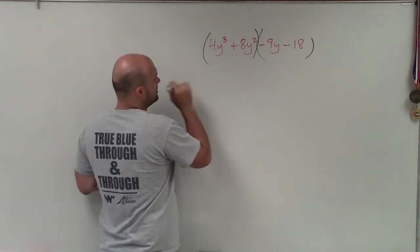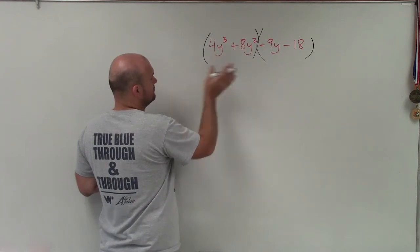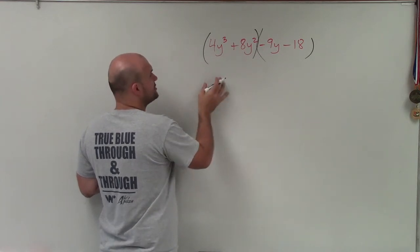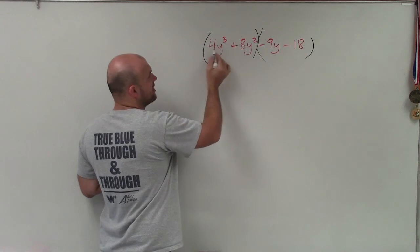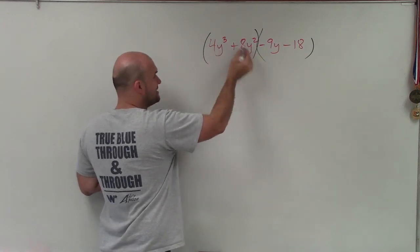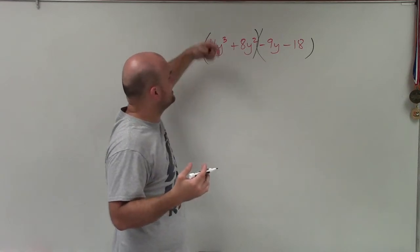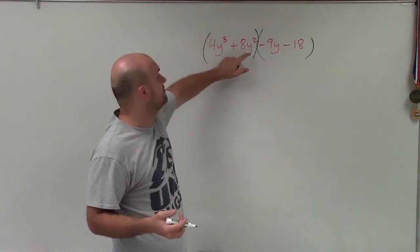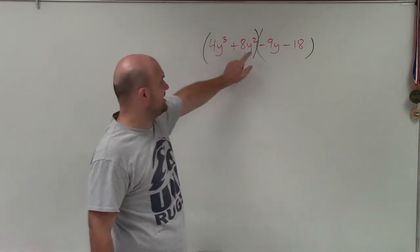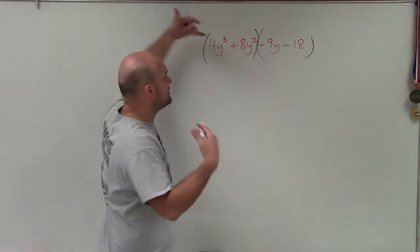So I go ahead in here and I factor out my common term. I look at this and I say, all right, they both share 4 as well as y's. Now, what is the largest power of y that they share? And that would be y squared, right? Because they both don't share y cubed. We can't divide y cubed into y. So by factoring them out,